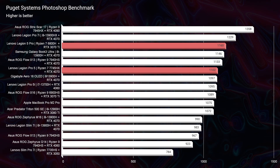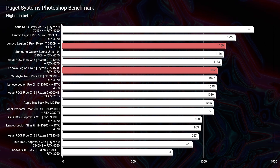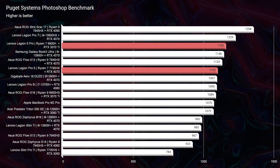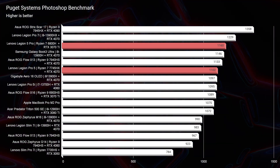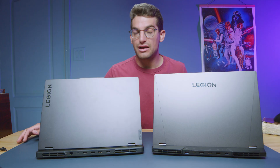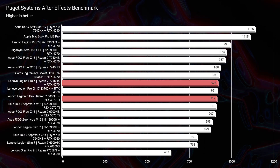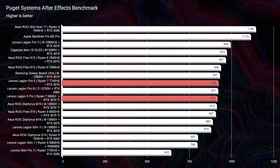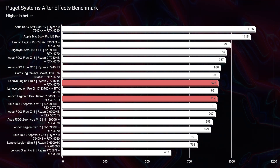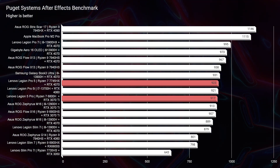Let's check out Photoshop. For the RTX 3070 Ti, we scored a 1,160, and for the RTX 4070, we scored a 1,102. Now looking at After Effects, we have a 923 out of the RTX 4070, versus a 917 out of the 3070 Ti.